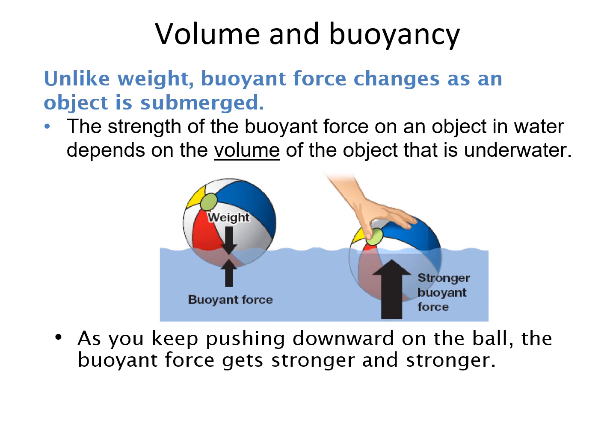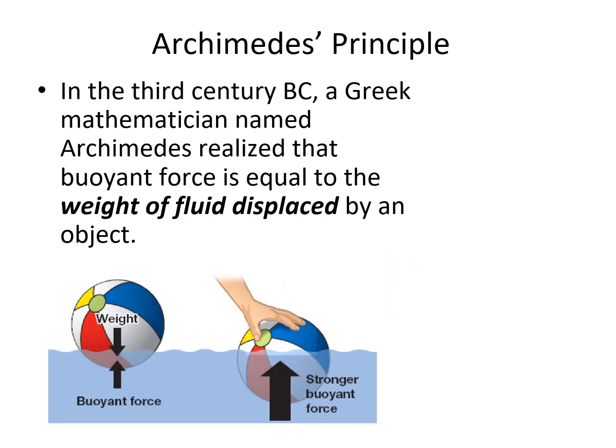The strength of the buoyant force on an object depends on how much of the object you have underwater. In the 3rd century BC, a Greek mathematician named Archimedes realized that the buoyant force is equal to the weight of the fluid displaced by an object.